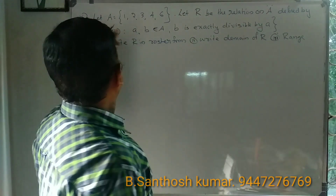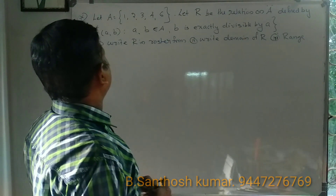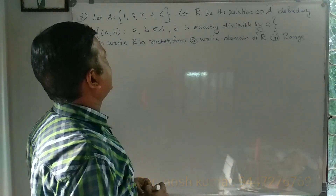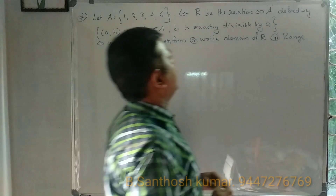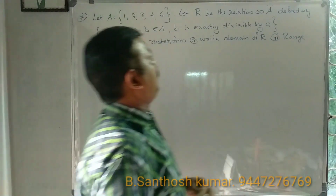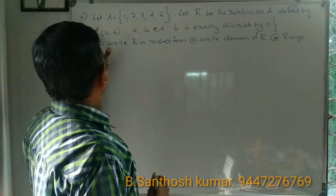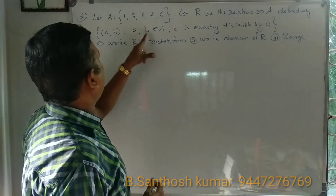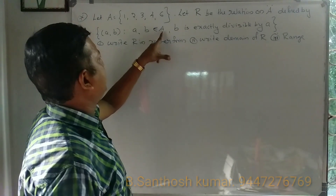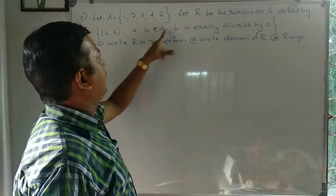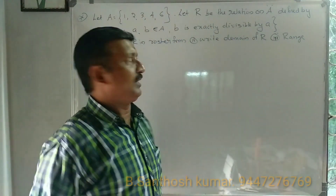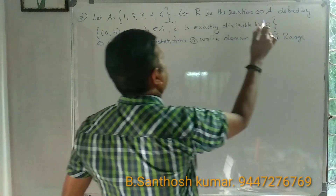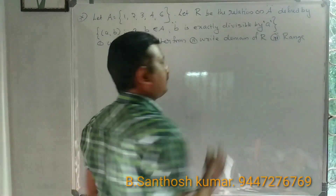Now the second problem: Let A = {1, 2, 3, 4, 6}. Let R be the relation on A defined by ordered pairs (a, b) such that a is exactly divisible by b.